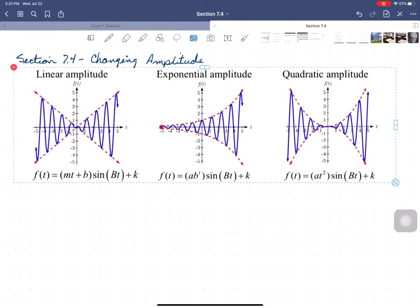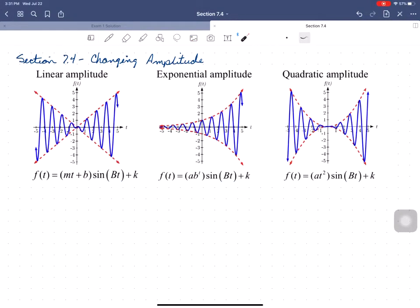So if I have got my function multiplied by a linear function, what we'll see is that my amplitude is linear. In other words, the further out I get from the origin, the bigger my amplitude gets. One way to think of this is the function will bounce back and forth between y equals mt plus b and y equals negative mt plus b.